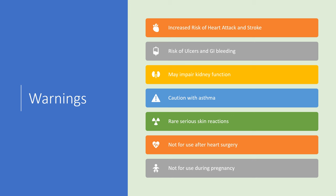The warnings: folks at increased risk of heart attack and stroke are generally not advised to use NSAIDs like naproxen, as these NSAIDs do increase the risk of heart attack and stroke. It increases the risk of ulcers and bleeding in the stomach and intestines. It may impair kidney function, though most of the time that will reverse once the medication is stopped. Caution with asthma — certain asthmatics are sensitive to NSAIDs and may have difficulty breathing. Rare severe skin reactions can occur. It is not for use after heart surgery or heart attack, as it really increases the risk of sudden death. And it is not for use during pregnancy.